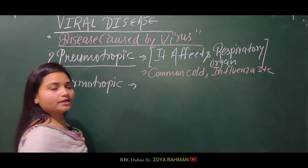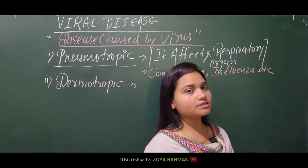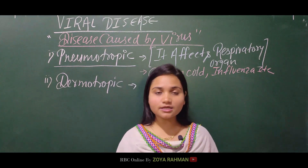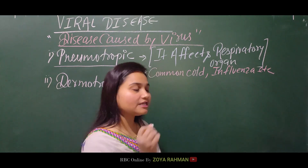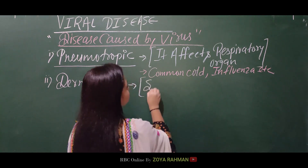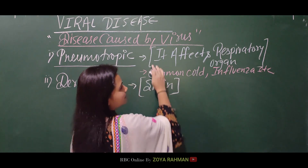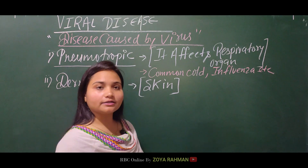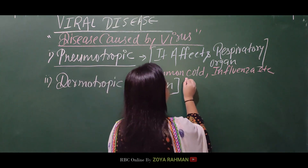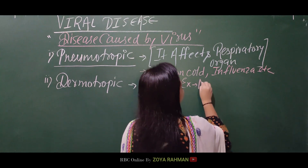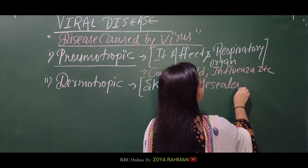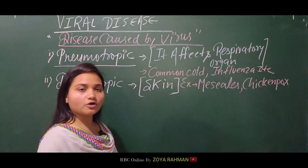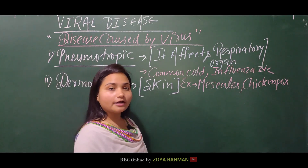The second category is dermotropic viral disease. Derma means skin, so this is the viral disease that affects our skin. Examples of dermotropic viral diseases include measles and chicken pox.